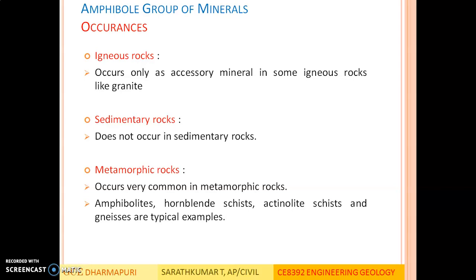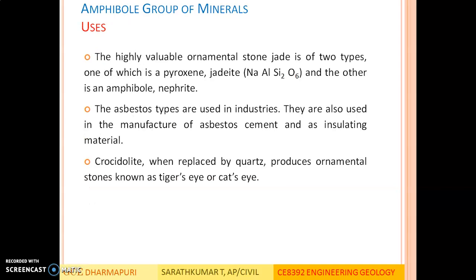Once weathering agents act, another mineral forms. In metamorphic rocks, amphiboles occur very commonly. Amphibolites, hornblende schist, actinolite schist, and anthophyllite schist are typical examples of metamorphic rocks where this type of mineral occurs.